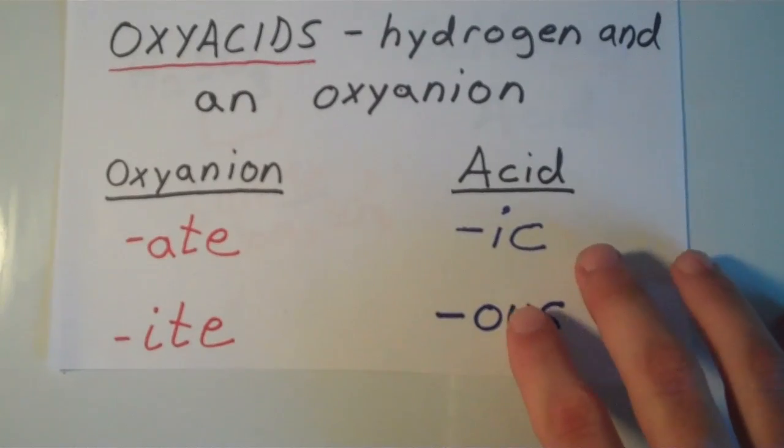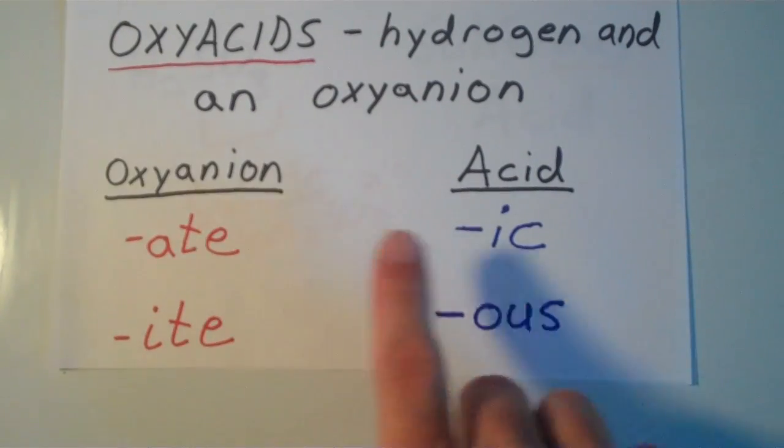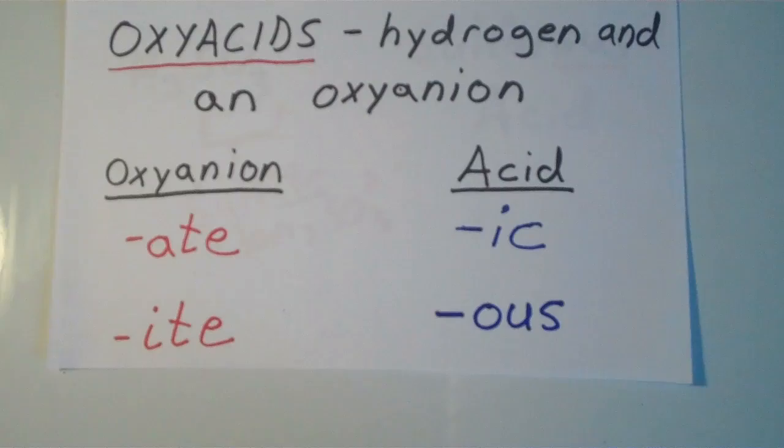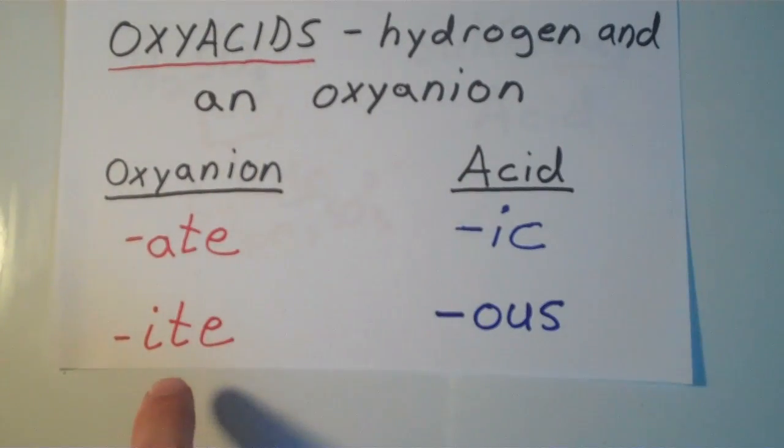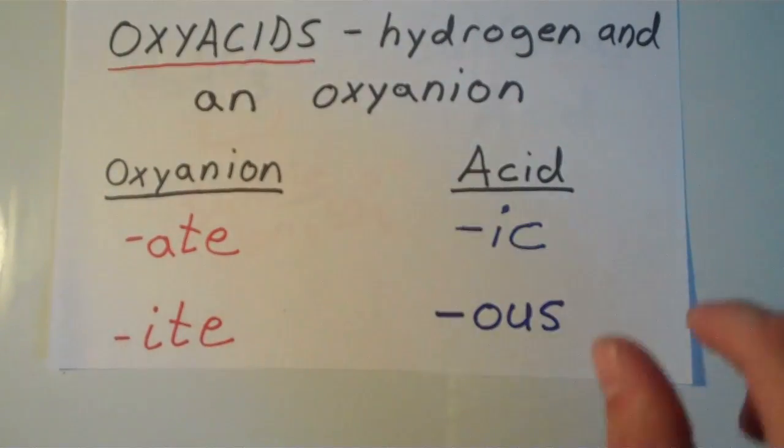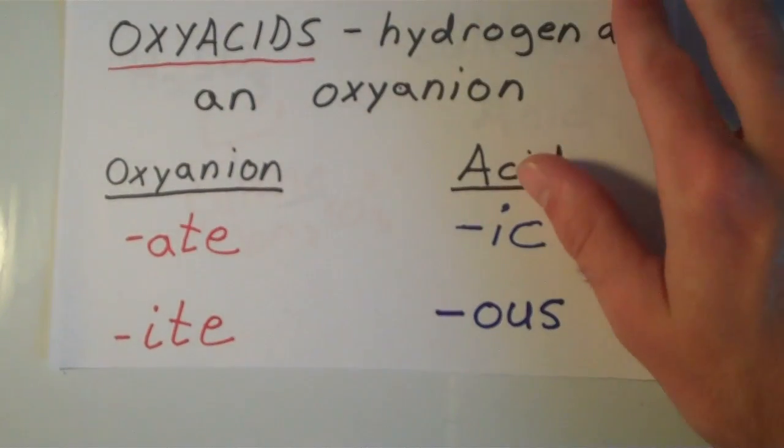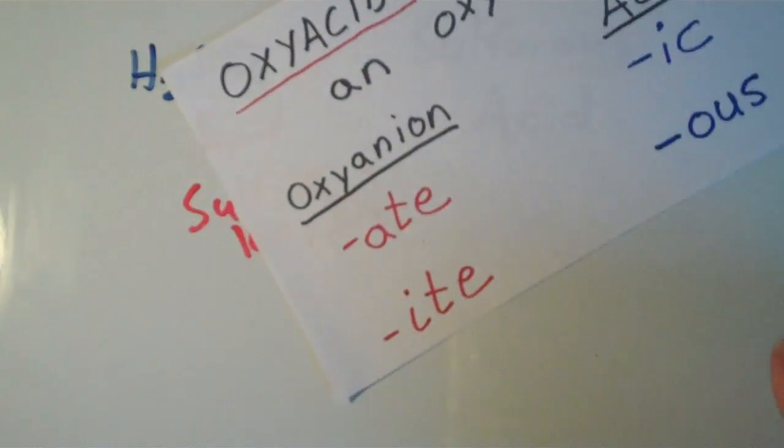A common mnemonic that people like to use is they just say -aticitis. It sounds like some kind of disease. But it's a little mnemonic that a lot of students use to remember that the oxyanion, if it ends with -ate, you do -ic, and if it ends with -ite, then you use -ous. That is how to name oxyacids.